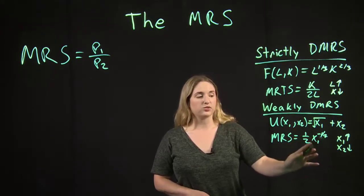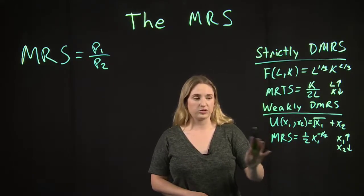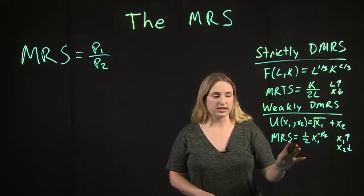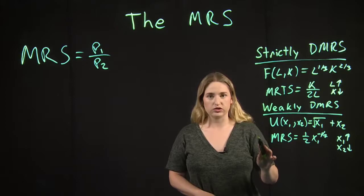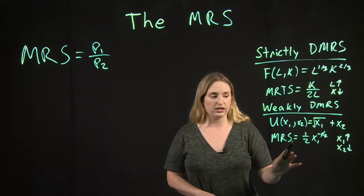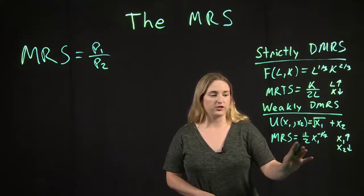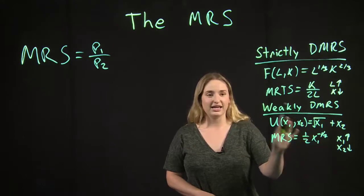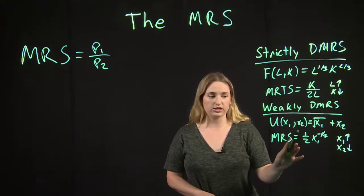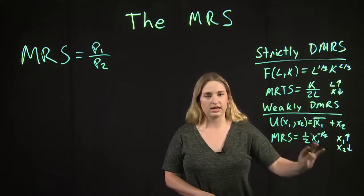In this case we could set the MRS equal to the price ratio and rearrange and get the interior optimal solution with positive amounts of good one and good two. But the issue is that there's also another solution, the corner solution. We would only consume good one and no good two. So in this case you have to be careful when the MRS is weakly diminishing because if the prices and income aren't such that you can consume positive amounts of both goods, you need to check on the corner solution where you would only consume one of the goods and none of the other.